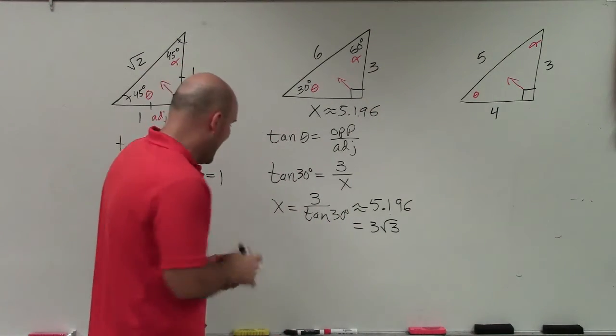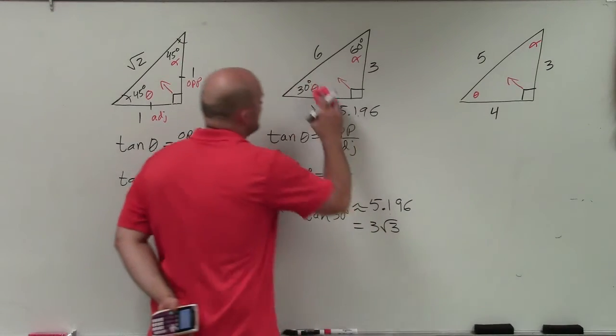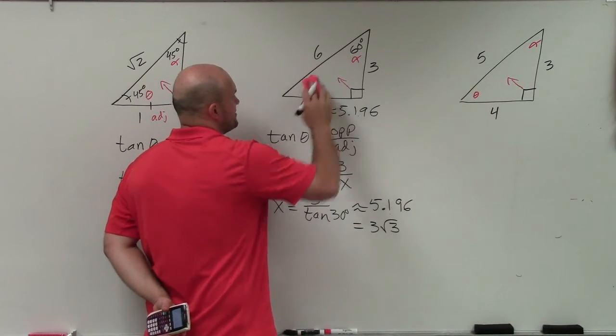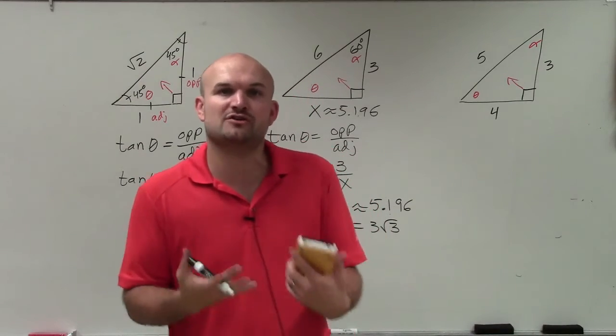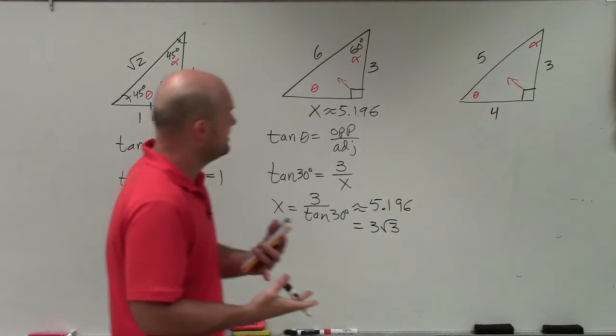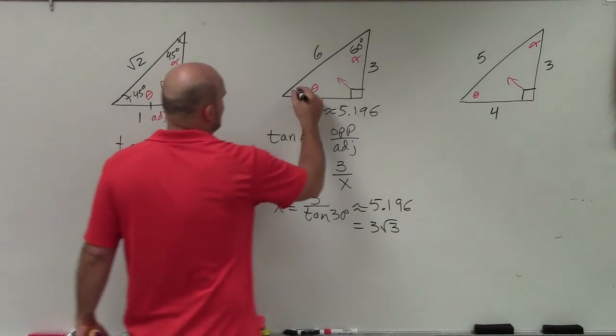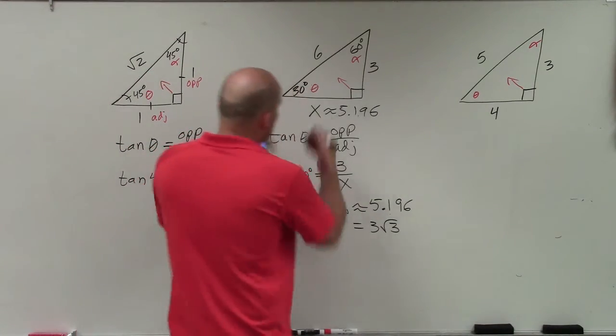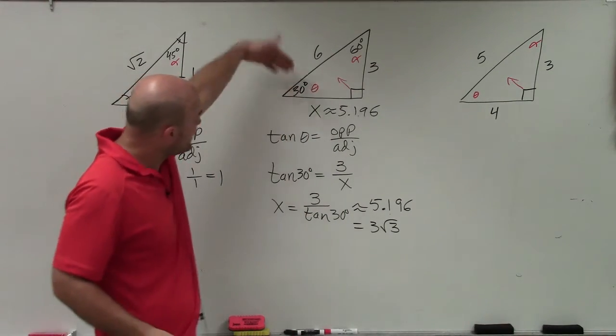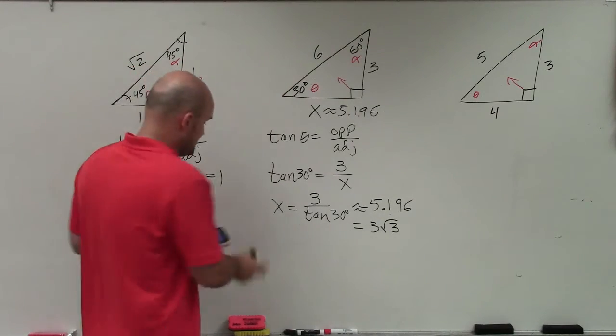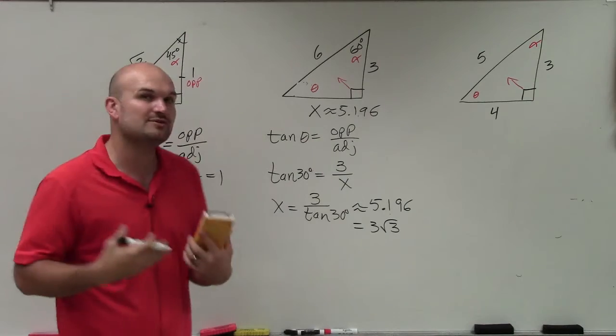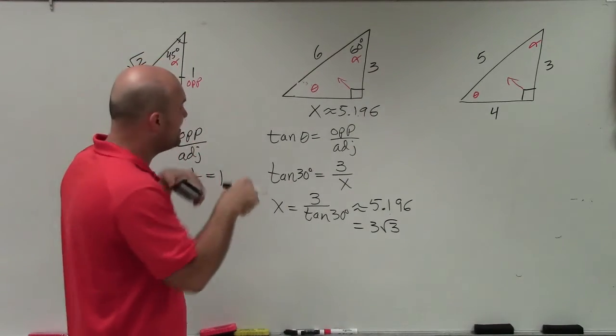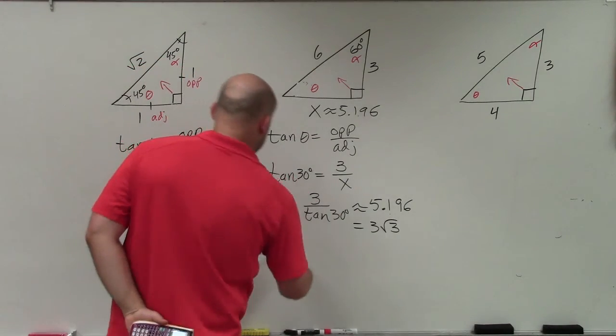But what if I didn't know what my 30 degrees was? What if I didn't know what theta was? Well, that's where our trigonometric functions come into play. If we don't know what this angle is, let's say we were like, well, maybe our problem is not given our angle. Then what we can do is use our trigonometric functions to find that angle.